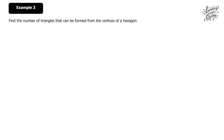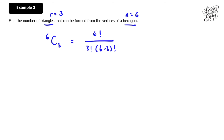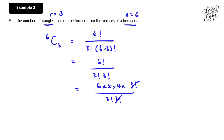Example 3: Find the number of triangles that can be formed from the vertices of a hexagon. A hexagon has six sides and six vertices, so n equals 6. To form a triangle, we need three points, so r equals 3. We use 6C3, which equals 6 factorial over 3 factorial times 3 factorial. This simplifies to 6 times 5 times 4 over 3 factorial, and the answer is 20 ways.